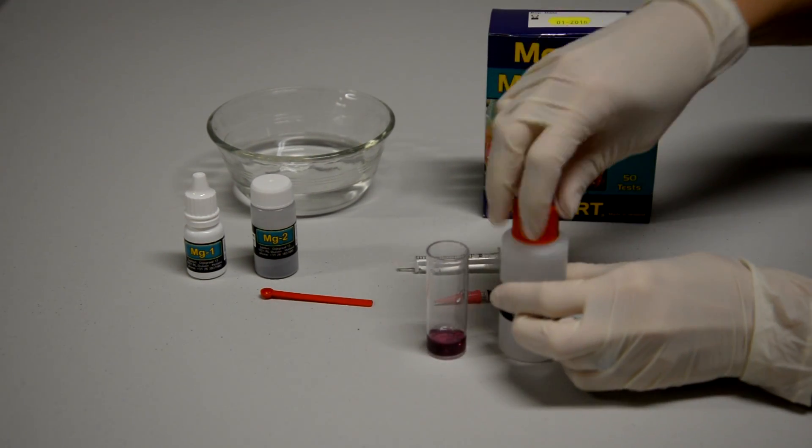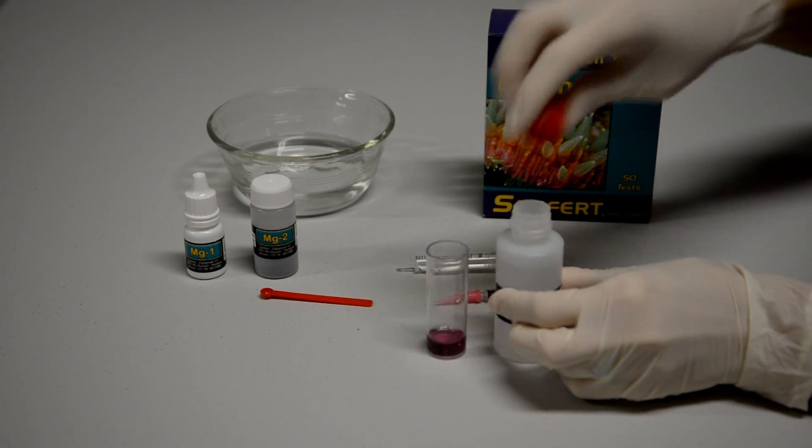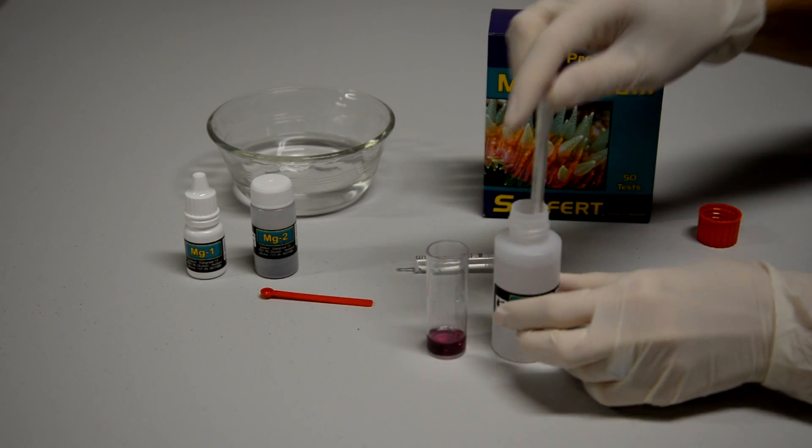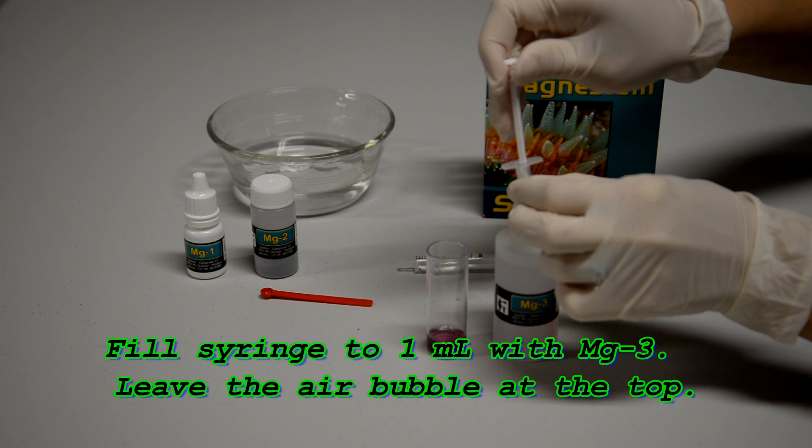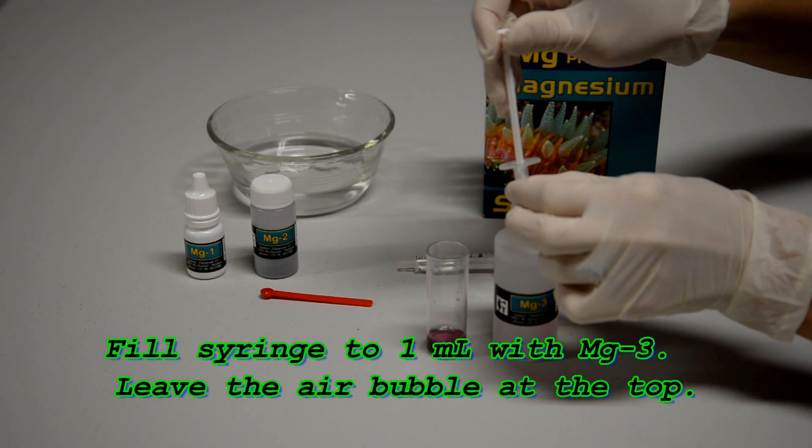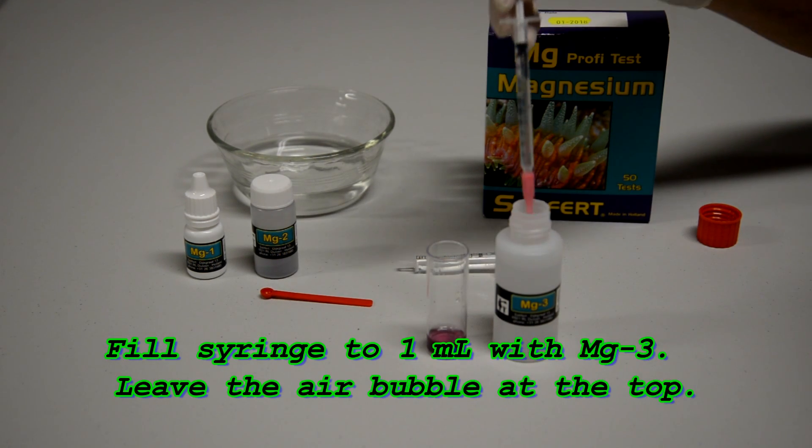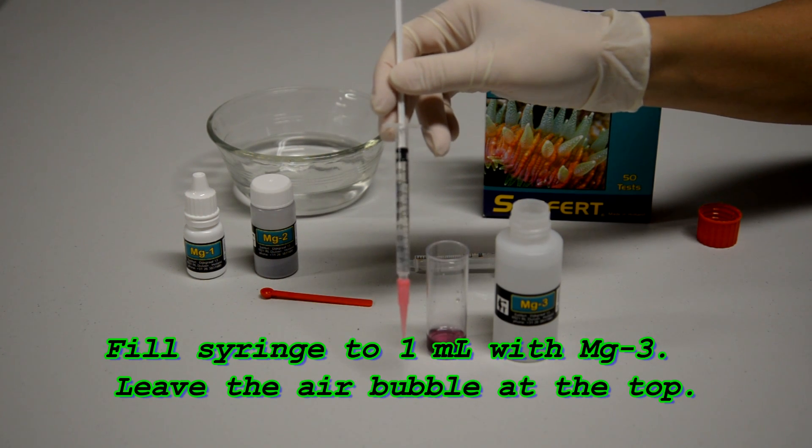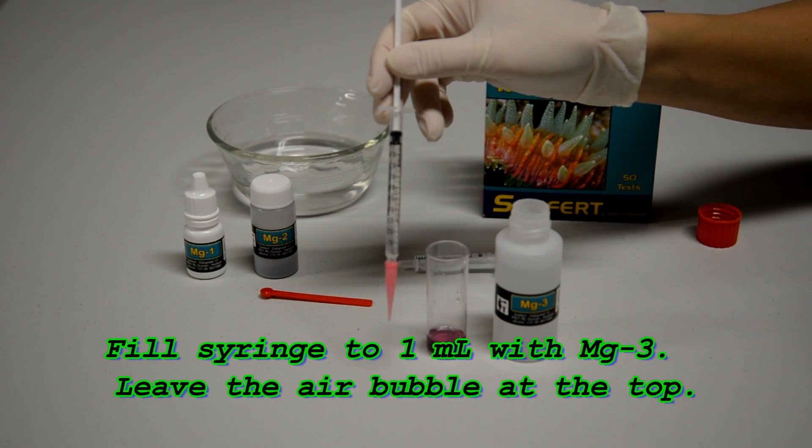Then you're going to fill up your syringe with the magnesium 3 solution. Fill it all the way up so you get one full ml in your syringe and be sure that you leave that air bubble at the top.